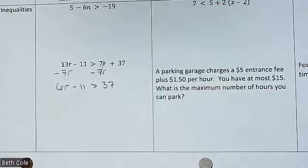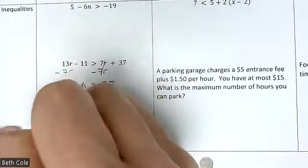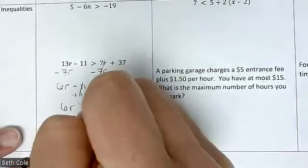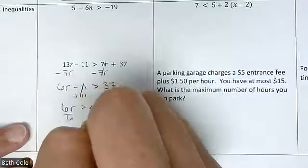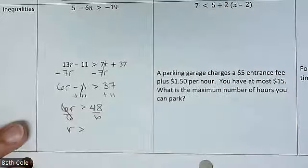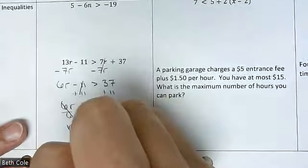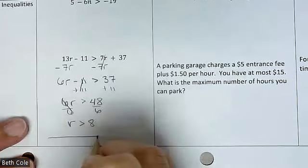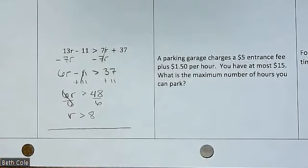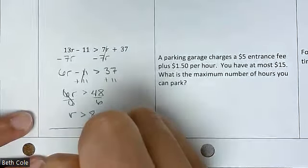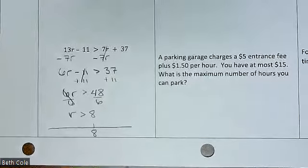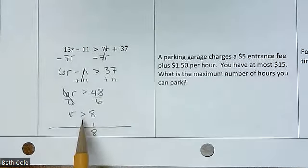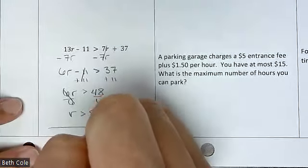The other common mistake with these is that people will change the inequality to an equal sign — just try not to let that happen. Plus 11, plus 11 — 6r is greater than 48. Then divide by 6. Does anyone know that one? 8 — and you'd be allowed to calculate. r is greater than 8.